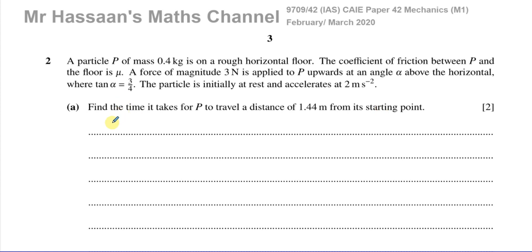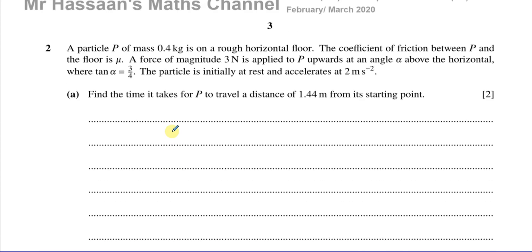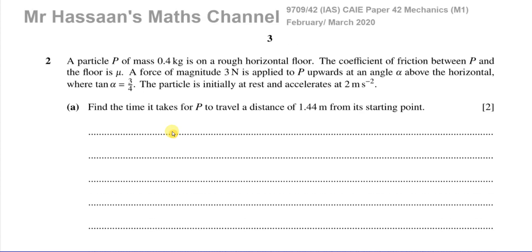Part B is asking us to find the value of mu. Part A is asking us to find the time it takes to travel a certain distance. So let's see first, before we draw any diagrams, seeing this is only worth two marks, can we work this out without actually doing any resolving of forces for part A? Do we have enough information? Because there seems to be quite a lot of information about the distance, its speed, initial and final. So let's write down what we know from SUVAT.